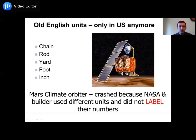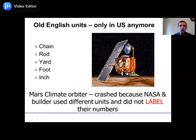A famous example is NASA, which was using metric units, and had a contractor — either Lockheed or Boeing — build a satellite to send to Mars: the Mars Climate Orbiter, which was supposed to orbit Mars and study its climate. It never went into orbit because there was a miscommunication. The NASA engineer assumed values were in Newtons, but the industry engineer assumed foot-pounds. Neither labeled their numbers. A value was sent that was assumed to be in Newtons but was actually in foot-pounds, so they fired the rocket with the wrong force and crashed it into the planet instead of achieving orbit. A very expensive mistake of units.